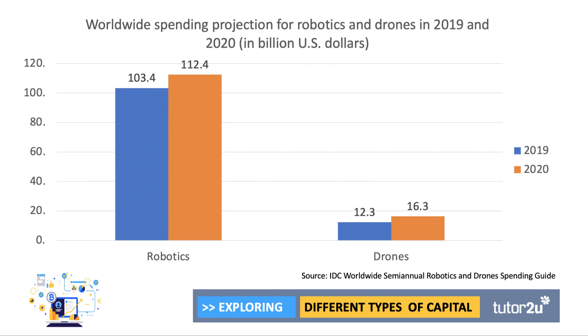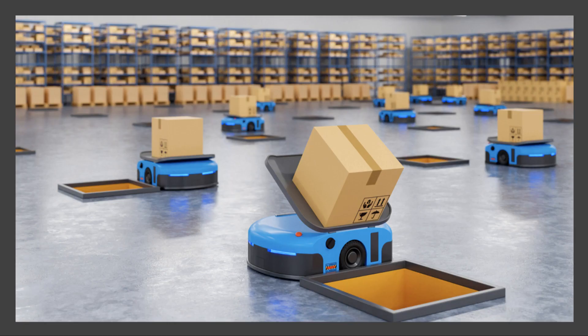In 2020, spending on drones is projected to rise by $4 billion US dollars compared to the previous year, reaching $16.3 billion dollars. Spending on robotics is already well above $110 billion dollars a year. We're seeing huge amounts of money invested in robots as a form of physical capital, particularly in the logistics industry, including businesses such as Amazon and Ocado.